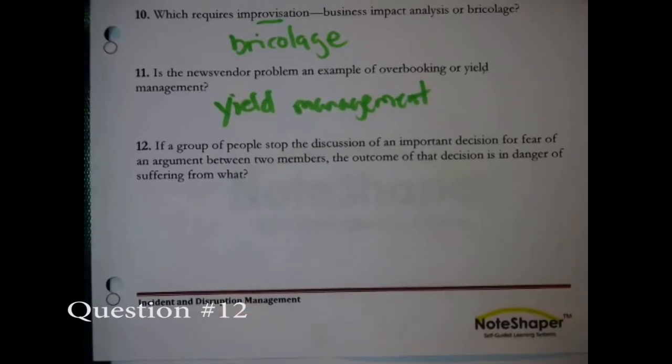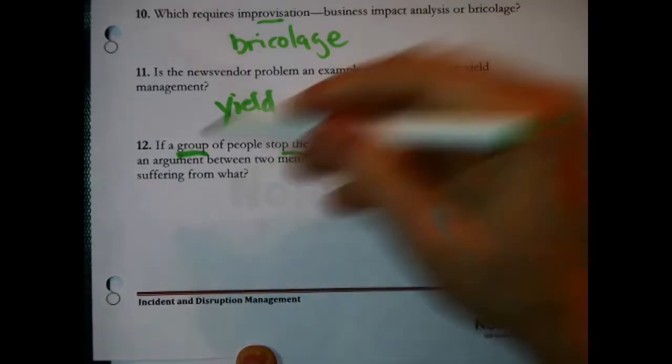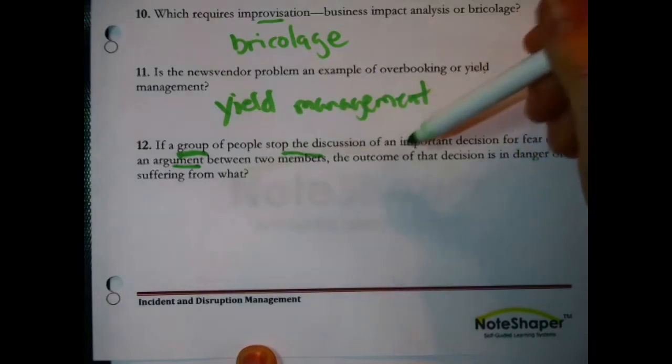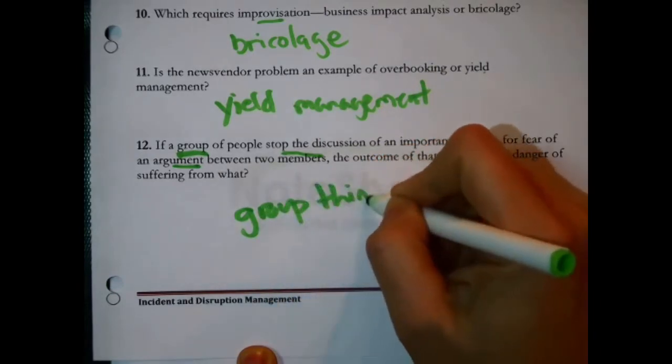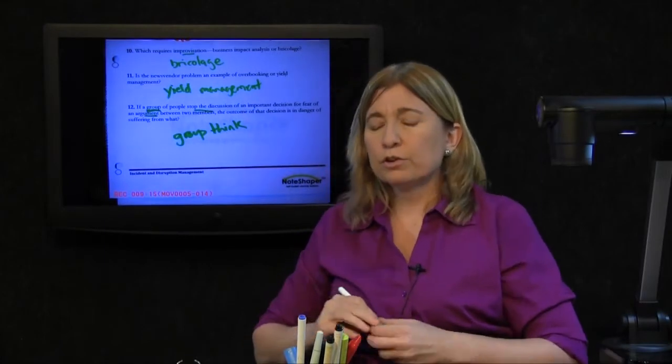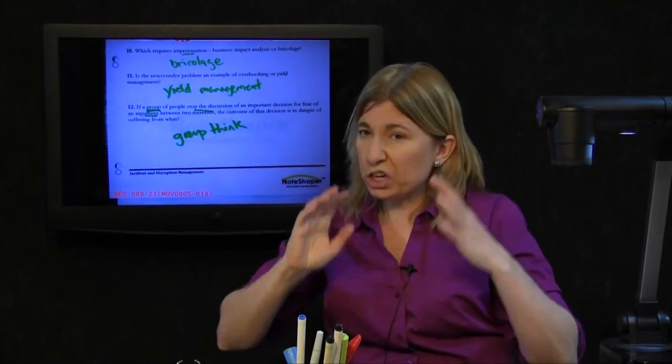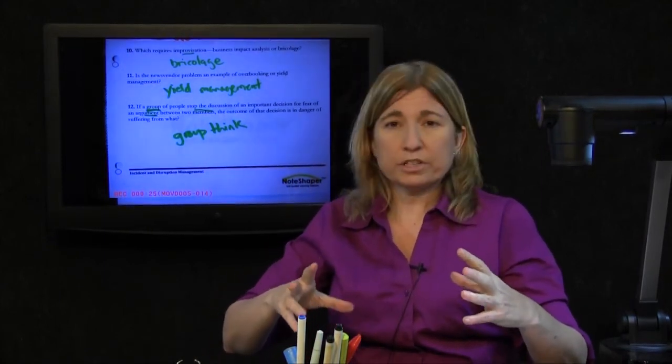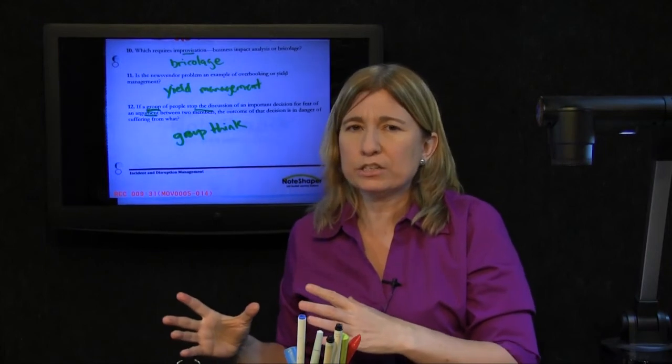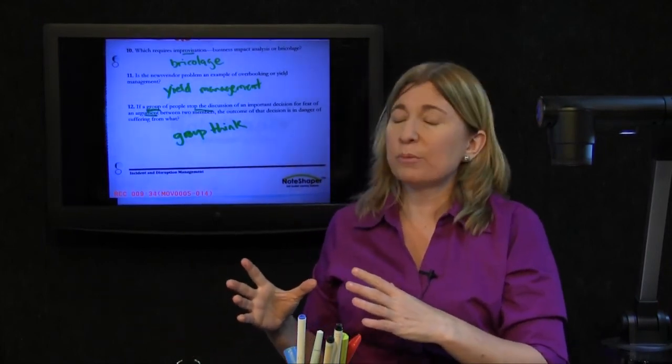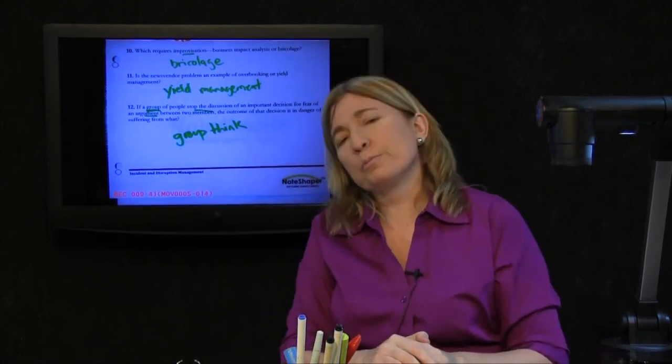If a group of people stop a discussion of an important decision for fear of an argument between two members, the outcome of that decision is in danger of what? It is in definite danger from groupthink. Groupthink refers to when an important decision is not explored completely in order to avoid conflict within the group. They stopped the discussion of the important decision because they were afraid of an argument breaking out between two people. So that is groupthink in action.